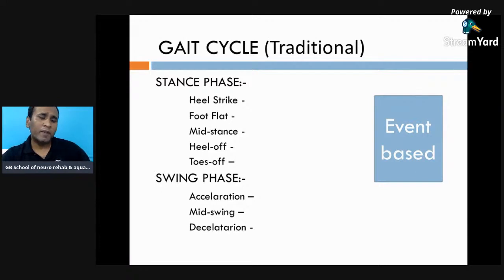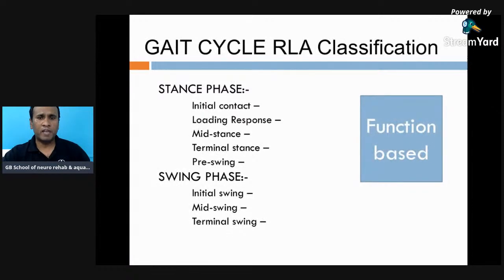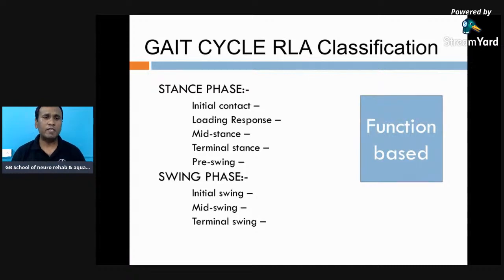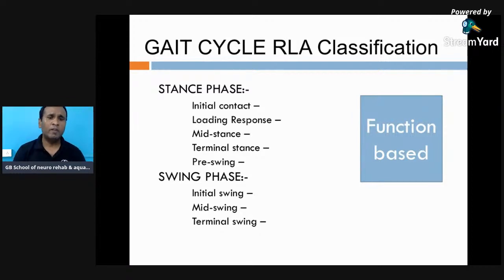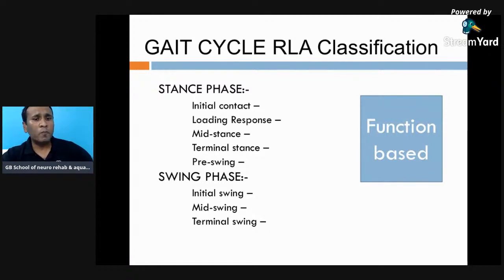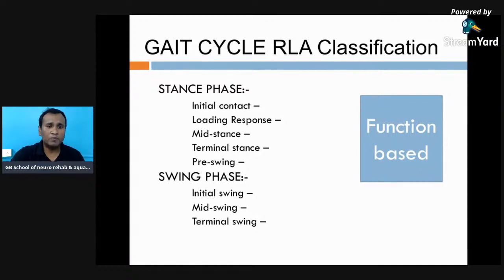Because the traditional classification is event-based, the event may or may not occur, causing confusion in treatment planning. The newer RLA classification is function-based — each phase is named for its purpose. Initial contact could be heel strike, flat foot, or toe contact. Loading response means the person starts loading after the leg touches the ground. Mid stance provides stability. Terminal stance prepares to terminate loading. Pre-swing prepares for the swing phase. Swing is divided into initial swing, mid swing, and terminal swing.